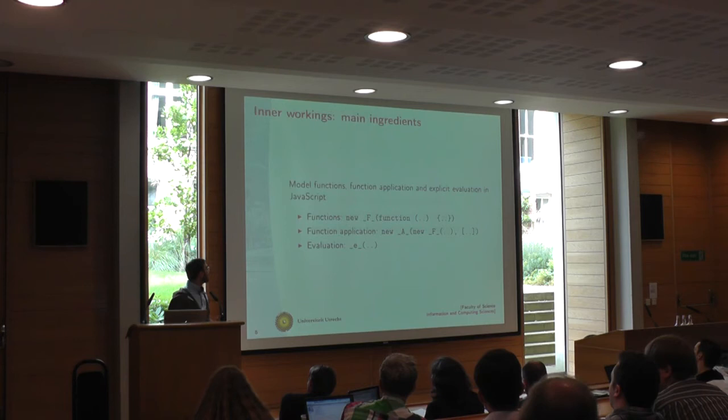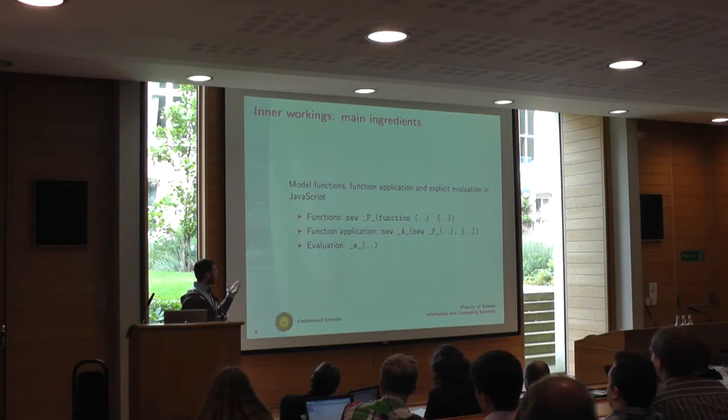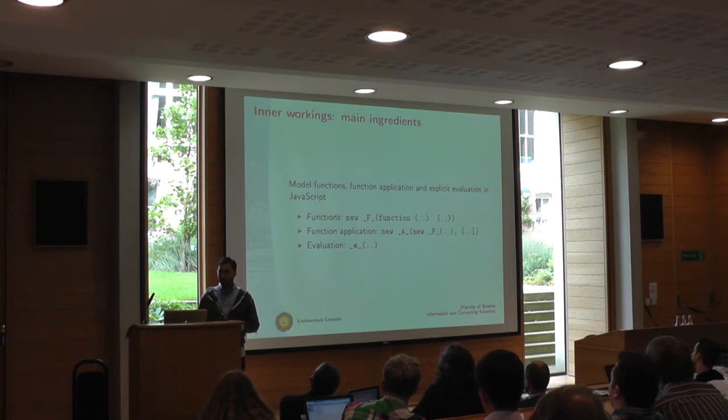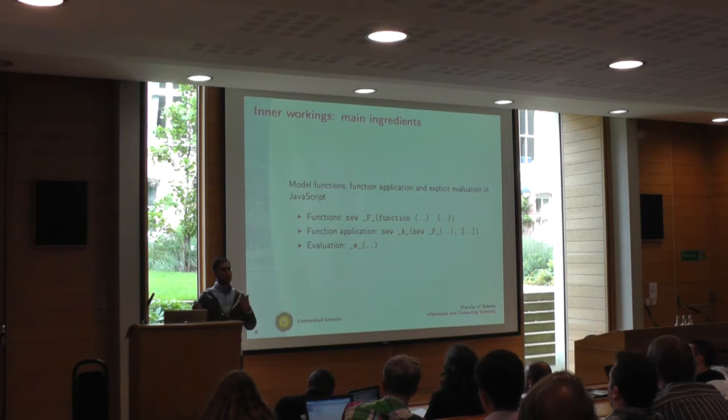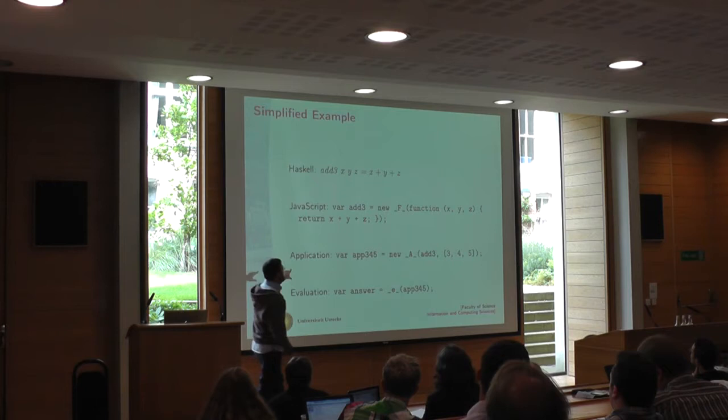What we basically use is lambda calculus. Everything gets compiled back down to lambda calculus with a lambda abstraction, a function application, and a little eval function. So we compile Haskell to Core, and then from there we go to lambda calculus.